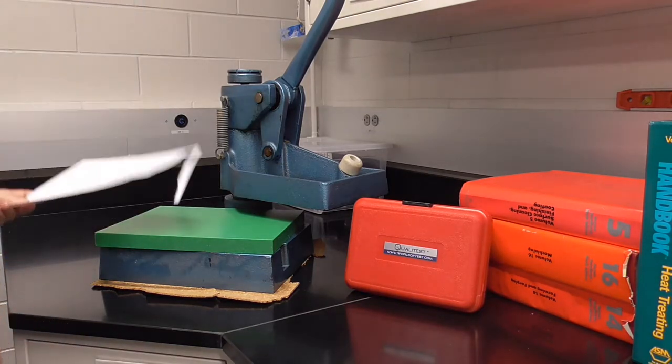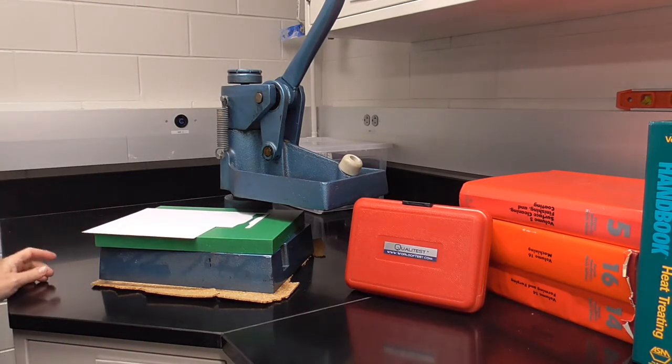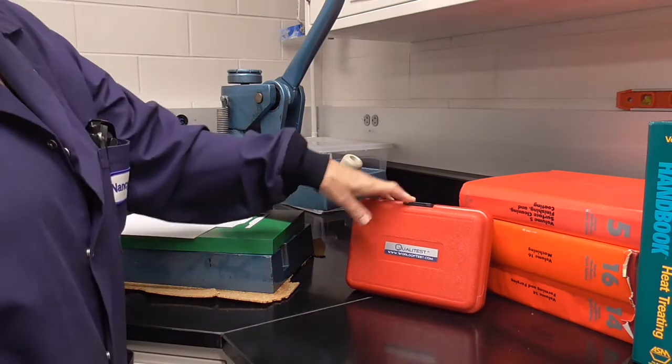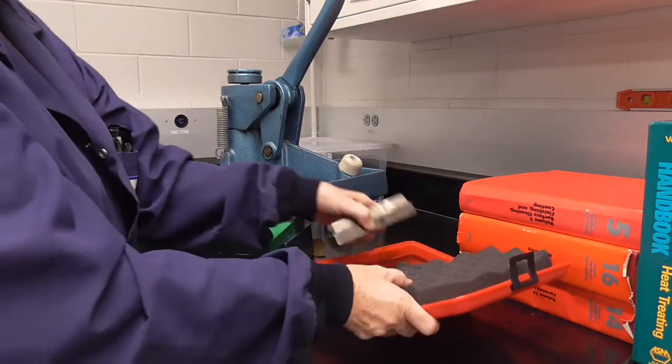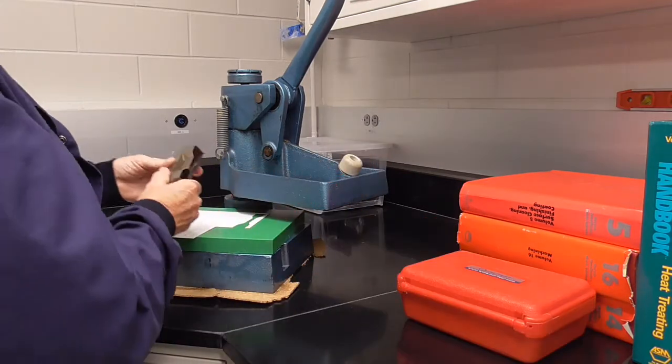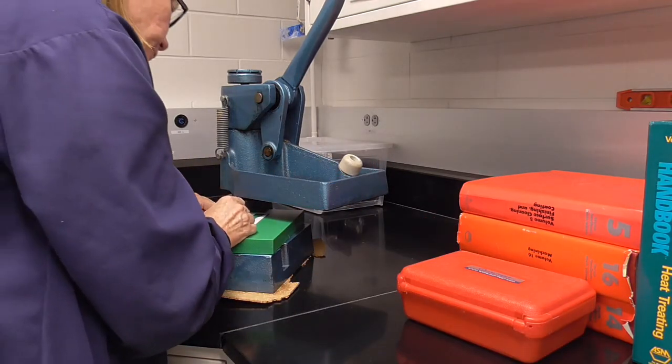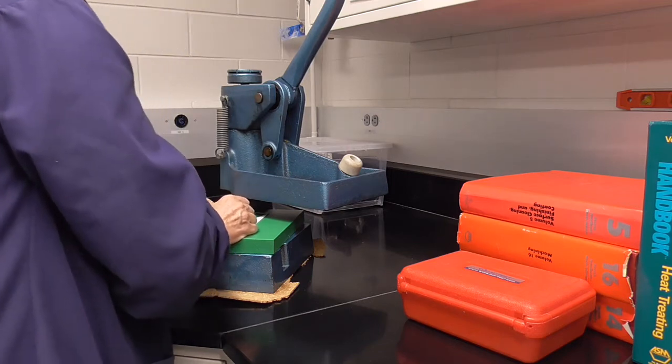Simply take your polymer film and place it on the plate, and here you'll find the die. Place it on the film where you want the dog bone cut.